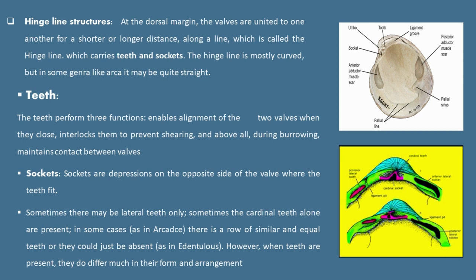First is teeth. The teeth perform three functions: they enable alignment of the two valves when they close, interlock them to prevent shearing, and above all during burrowing maintain contact between valves. Sockets are depressions on the opposite side of the valve where the teeth fit. Sometimes there may be lateral teeth only, sometimes cardinal teeth alone are present, and in some cases there is a row of similar and equal teeth, or they could just be absent.